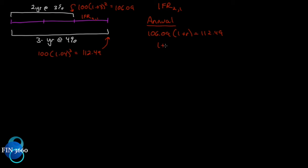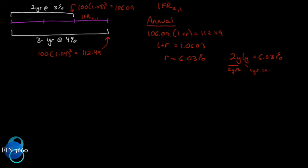All we have to do now is solve for r. Dividing both sides by $106.09, we get: 1 + r = 1.0603, so r equals 6.03 percent. The notation we write is: 2y1y = 6.03 percent. That's how we write a forward rate — 2y1y or IFR 2,1. This means: when — in two years; what — a one-year investment, loan, or borrowing. Whenever you see these terms, that's what it means: when and what.